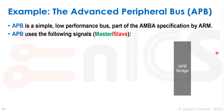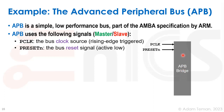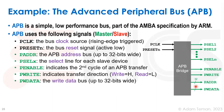APB uses the following signals, shown on an APB bridge — which has a slave on one side and a master on the other. The general signals going to both master and slave are PCLK and PRESETn (active-low reset), making it a synchronous resettable bus. On the master side, in green, we have PADDR — a 32-bit address to select a slave — PWDATA — 32-bit write data — PWRITE — the write enable indicating read or write — and PSEL select signals.